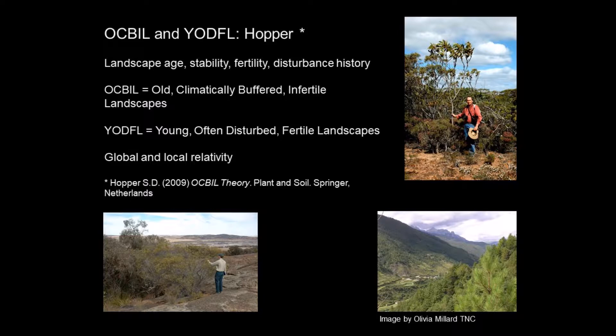This relates to Steve Hopper's OCBIL and YODFIL concept — old climatically buffered infertile landscapes versus young often disturbed fertile landscapes. You can see this comparing much of the Northern Hemisphere with parts of the Southern Hemisphere like South Western Australia. Even within Australia, you can compare the older South West landscape — old since glaciation, buffered by oceans, isolated and infertile because it's so old and eroded — versus the East Coast, which is 40 times younger, still has sharpness in the landscape like the Australian Alps and Great Dividing Range, has real soil, and plants that behave very differently.